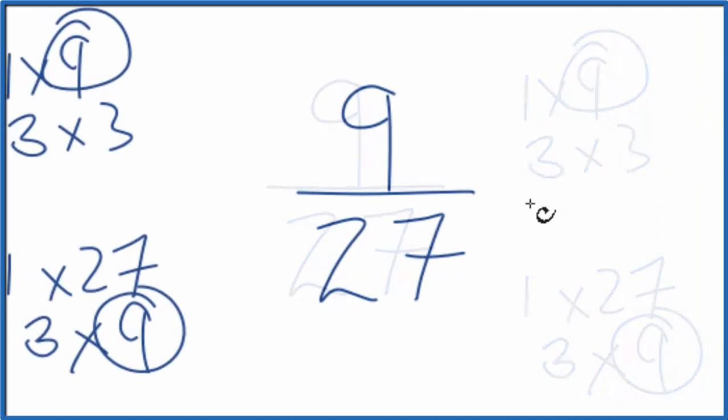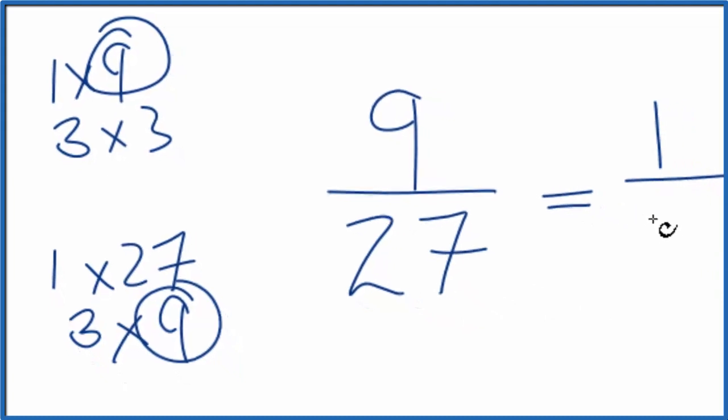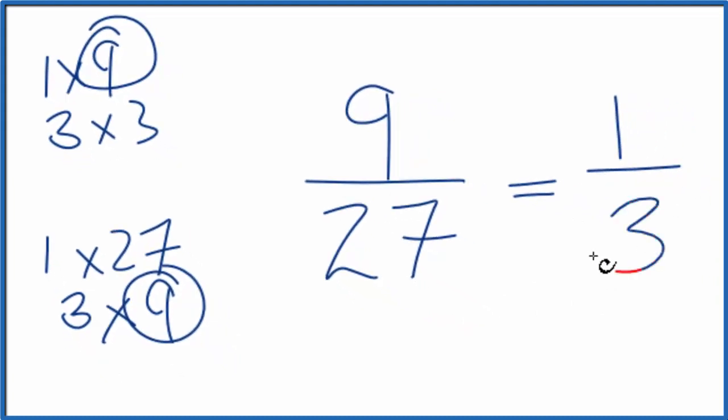Let's move these. So if we divide 9 by 9, we get 1. If we divide 27 by 9, 3 times 9 gives us 27, so 1/3 is the simplified fraction for 9/27.